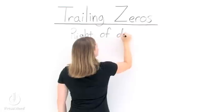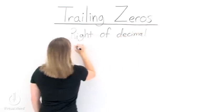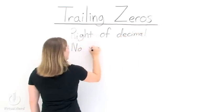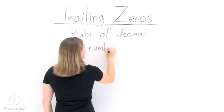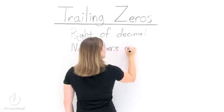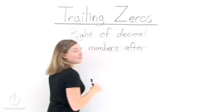It needs to go after or to the right of a decimal. And it also can have no numbers after it. In other words, a trailing zero is just a zero that sits or trails at the end of a decimal.